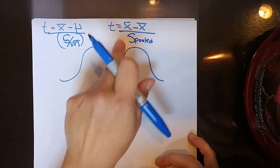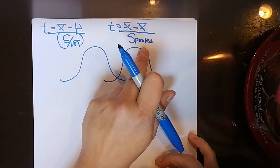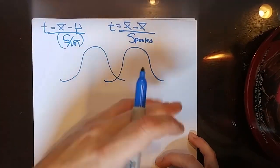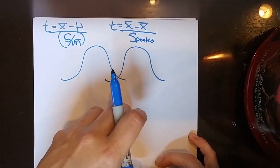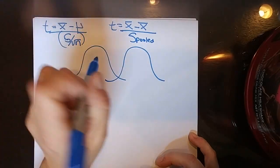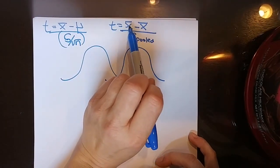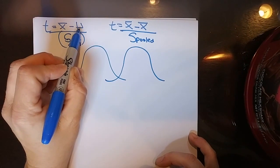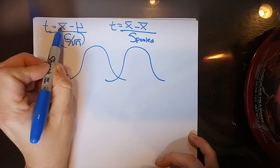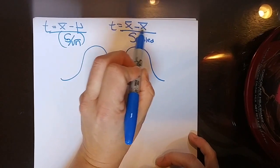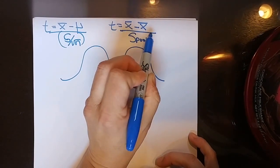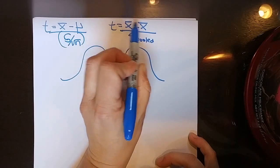Remember this denominator got complicated because we had two sets of distributions, so we had two sample sizes and two guesstimates for what the standard deviation would be, but essentially it's the same process. It's: what did I get minus what I thought I'd get, divided by the standard deviation of whatever it is I'm measuring.